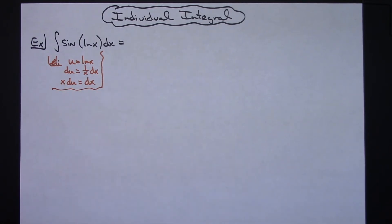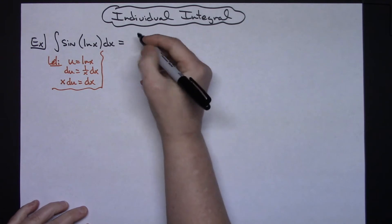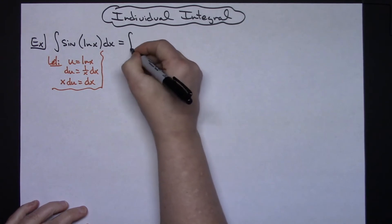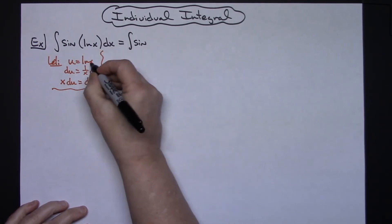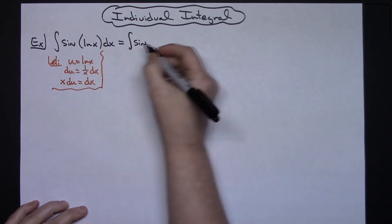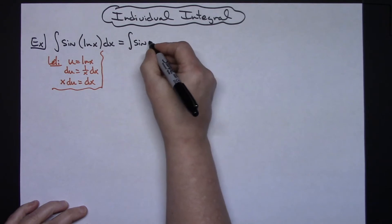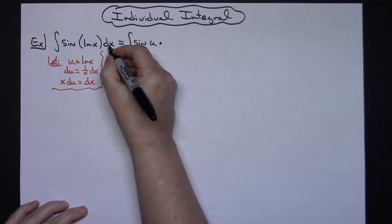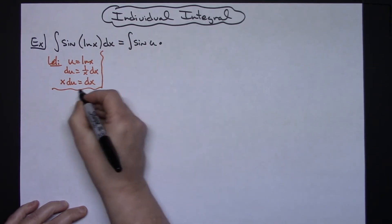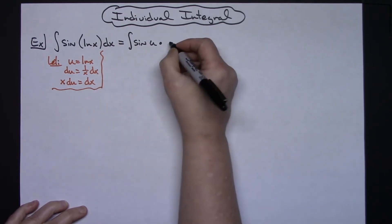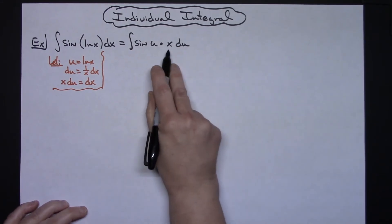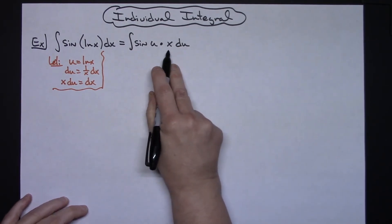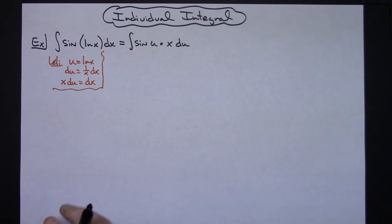We're going to come back and substitute into the original equation. So I'm going to have the integral of sine, and then natural log of x I'm going to replace with u. And then I'm going to replace dx with what it equals — x du. Now at this point I've got that extra x in there that I don't need.